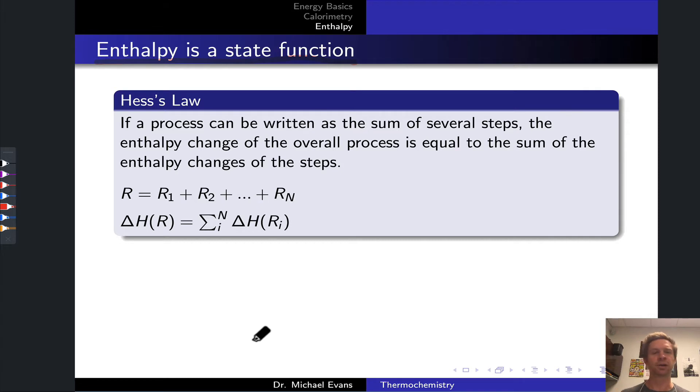This means that if we can take a process and break it up into a series of sub-processes that overall still get us from the same initial state to the same final state, then the overall enthalpy change must be equal to the sum of the enthalpy changes of the individual steps. Think back to the climbing a mountain example. The difference in height from Kilimanjaro to Everest is equal to the sum of the differences in height when I climb down Kilimanjaro, walk to Mount Everest, and climb up Mount Everest. That's the essence of Hess's Law.